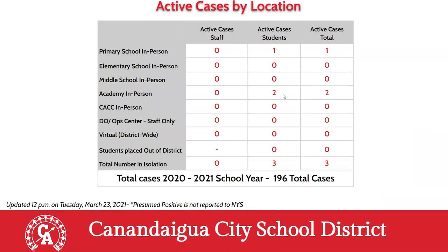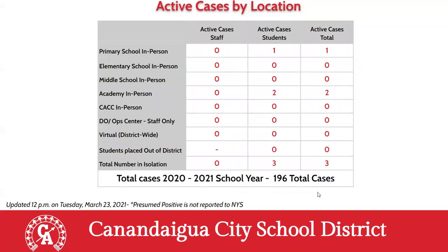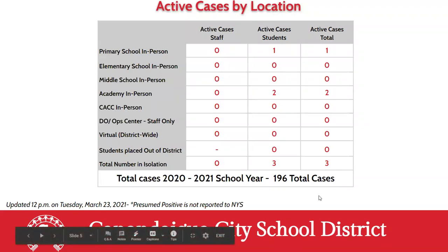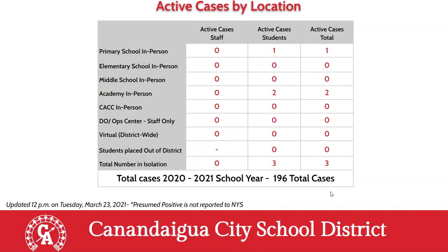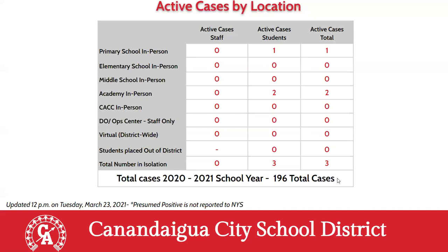We have three total reportable cases out of over 4,000 people, and we've been doing well for a while. The three cases are all students — one at the primary and two at the academy. We've had almost 200 total COVID cases this school year and about 700 quarantines. Out of curiosity, we looked at people quarantined due to a possible school exposure and whether they developed COVID — very rarely, maybe 1-2% of those cases. We can really only think of three instances where there may have been school spread.